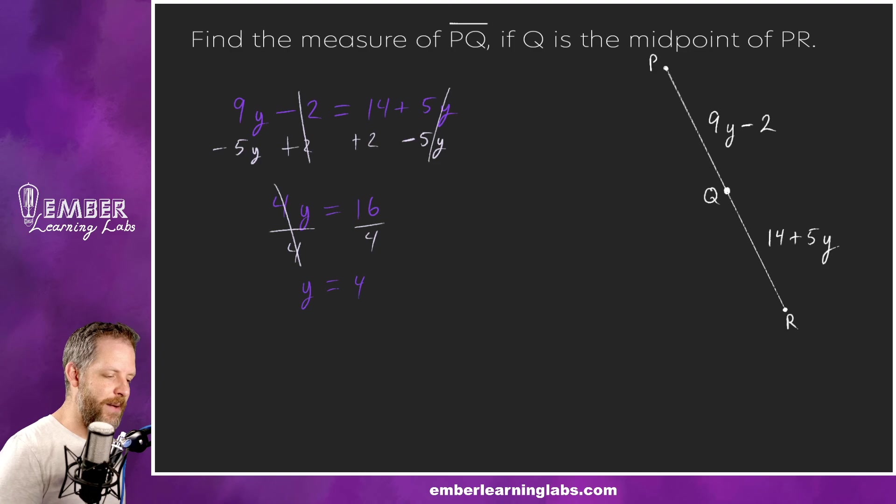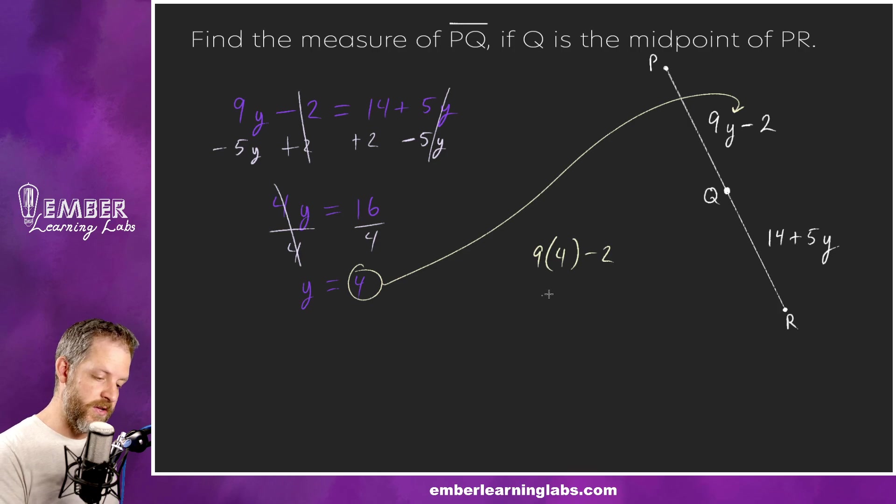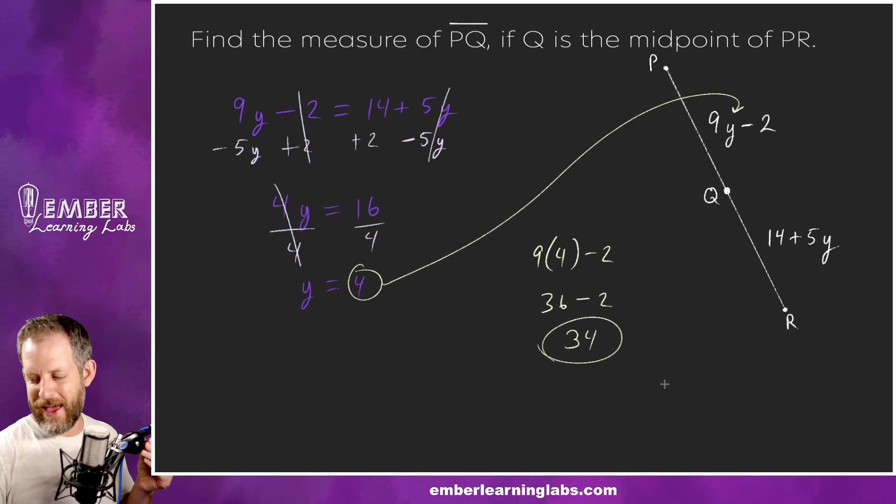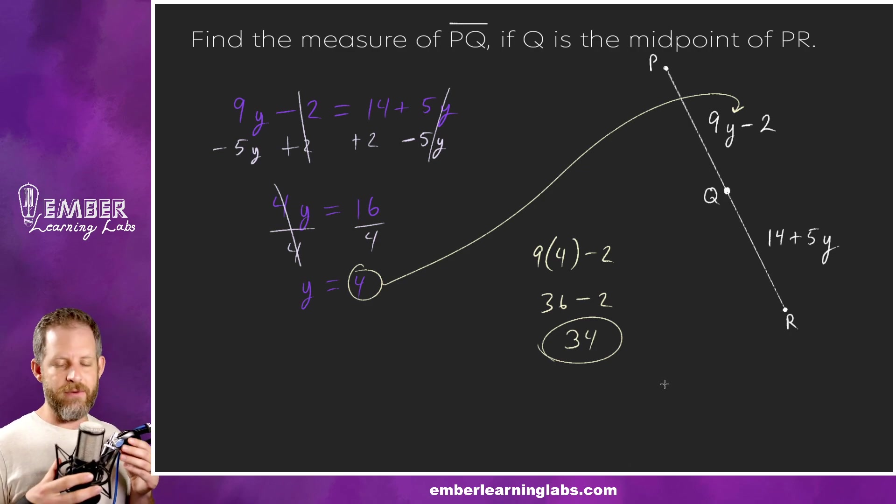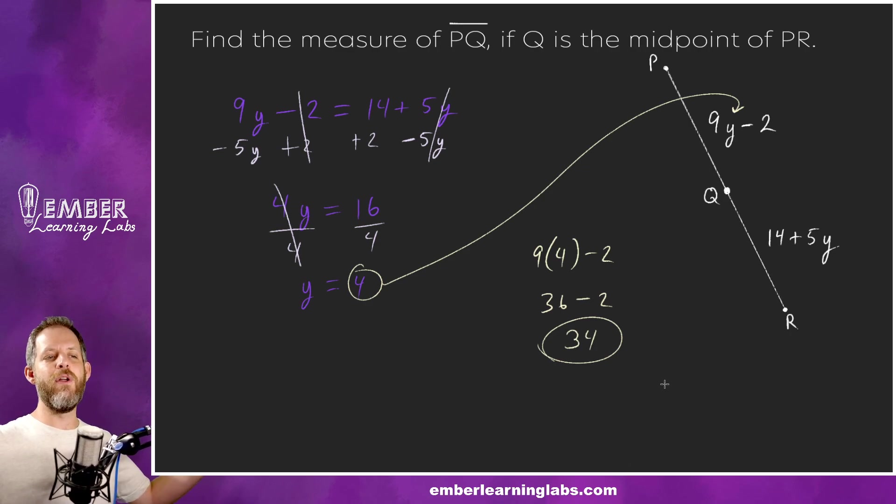Now we've got a problem here and it doesn't say anything about y up here so we're probably not done. Let's go back up and read what's happening. Find the measure PQ if Q is the measure of PR. So we want to find PQ which would also be QR. So we need to, in order to do that is we could actually technically plug it back into either one of those places. We're going to plug it in to this one right. So nine times four minus two. Nine times four is 36, bring down minus two. 36 minus two is 34. That's it, we's done. There's no units so that's the end of that problem. If this was a word problem with all kinds of stuff then there would probably be units and that would be very important.